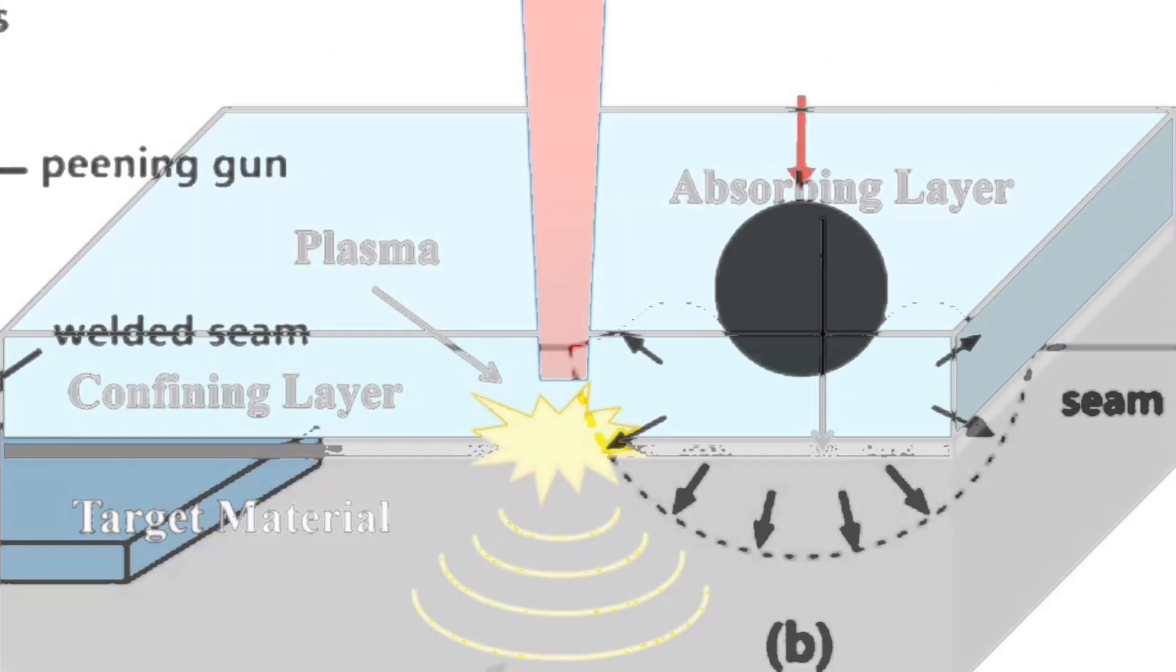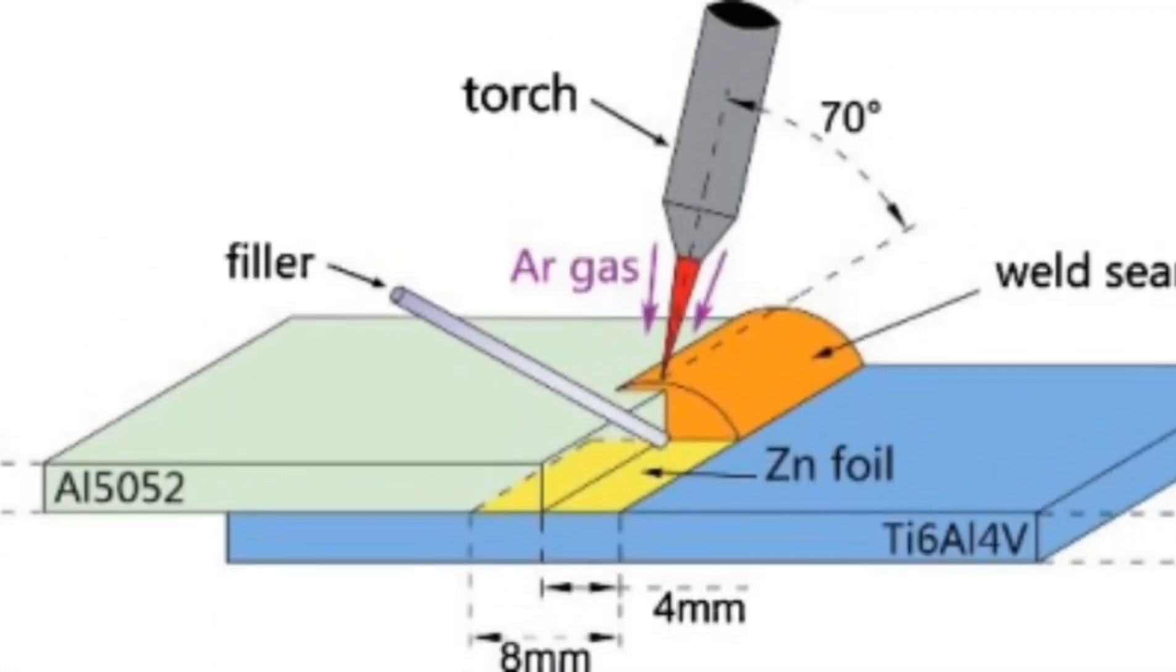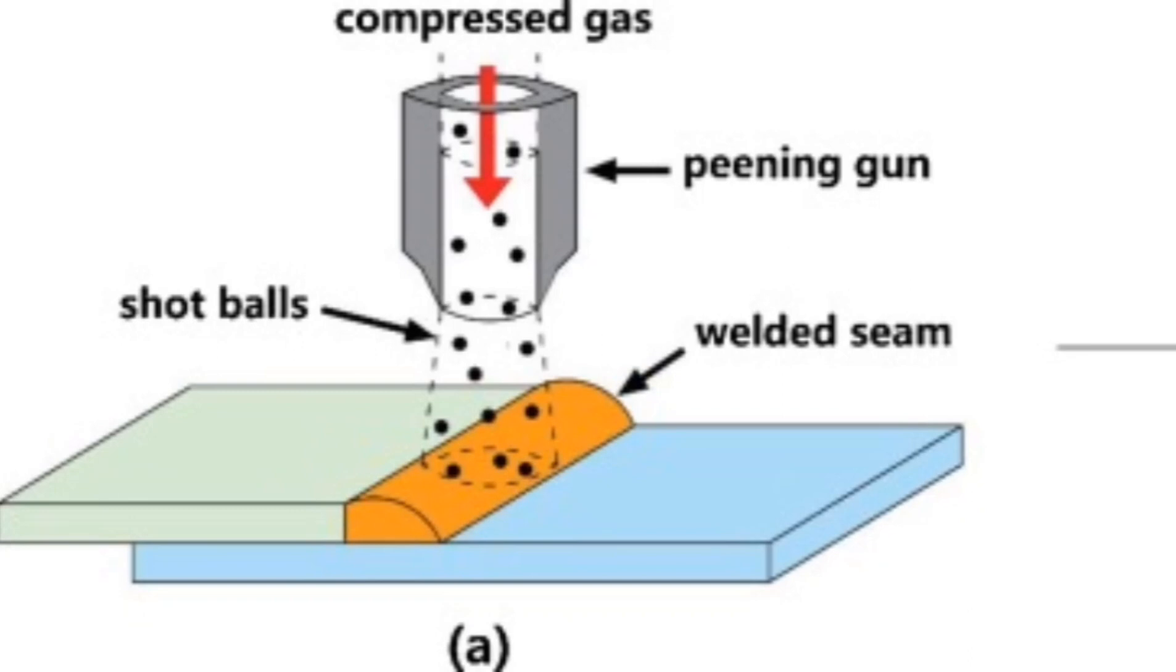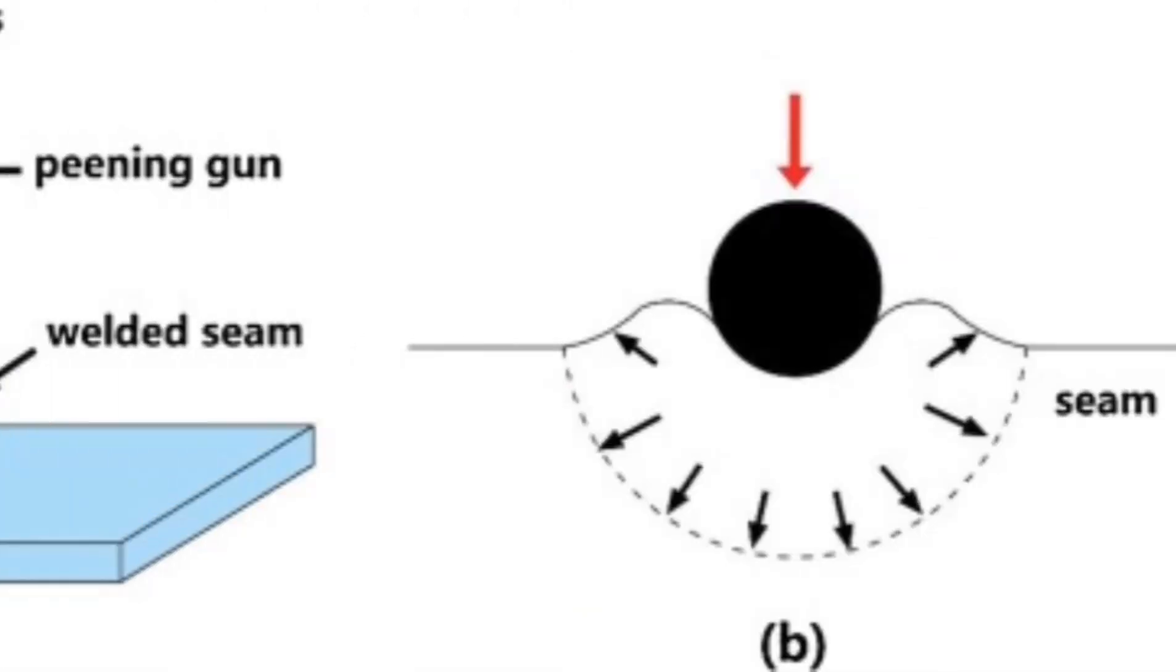Stretching the weld bead over the surface during pinning creates internal stress on the surface layer, which receives corresponding balance from the internal tensile stress of the parent material.